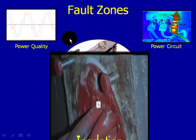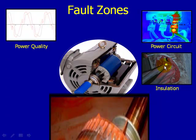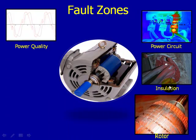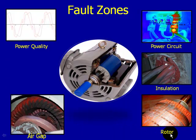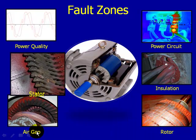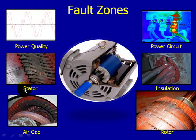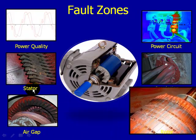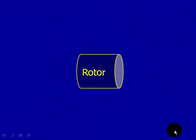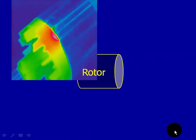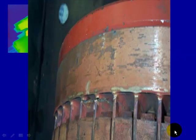We use the six-fault zone approach to analyzing your electric motors. Those six zones are power quality, power circuit, insulation, rotor, air gap, and stator. Today, specifically, we're going to focus on the rotor fault zone.